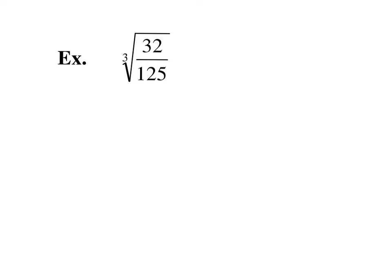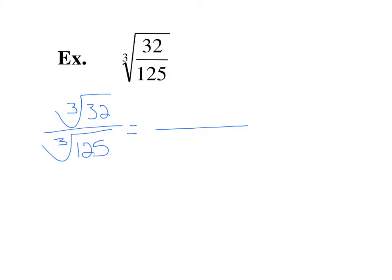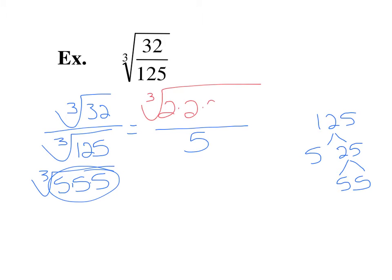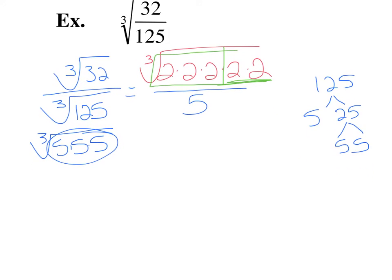We're looking for the cube root of 32 over 125. Don't forget — with fractions it's okay to separate them into smaller radicals for the numerator and denominator. The third root of 125: breaking 125 down gives 5 times 5 times 5, so the third root of 125 is 5. For 32: it breaks down to five 2's. We're only looking for a group of 3, so a 2 comes to the outside with two 2's left on the inside. That gives us 2 times the cubed root of 4 over 5.